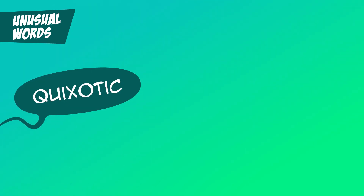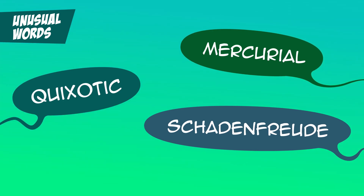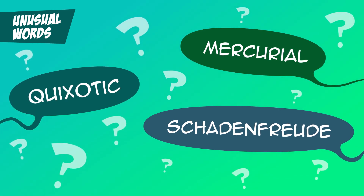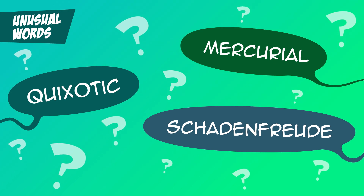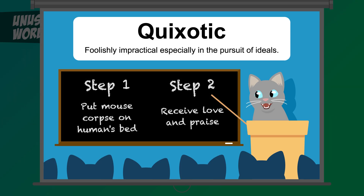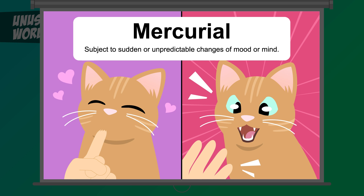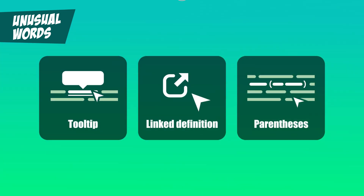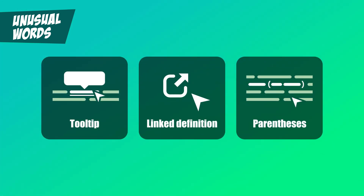Unusual Words. Every now and then, you'll stumble on a word like 'quixotic,' 'mercurial,' or even 'schadenfreude.' For some people, these words might be fun, but for others they're stumbling blocks — especially for folks with cognitive disabilities, language learners, or anyone who's just unfamiliar with them. Quixotic: foolishly impractical, especially in the pursuit of ideals. Mercurial: subject to sudden or unpredictable changes of mood or mind. Schadenfreude (German): taking pleasure in someone else's misfortune. This one's AAA, but I encourage you to provide definitions for complex or technical terms right there on the page. This can be as simple as a tooltip, a linked definition, or even just a brief explanation in parentheses.